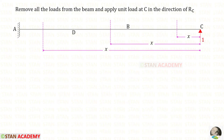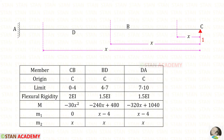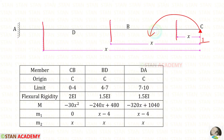Now we find moment M2. We apply a unit load at point C (the second coordinate). For all sections, the unit load acts anti-clockwise so it is positive, and the distance from C is x. Therefore M2 equals x for all three members.